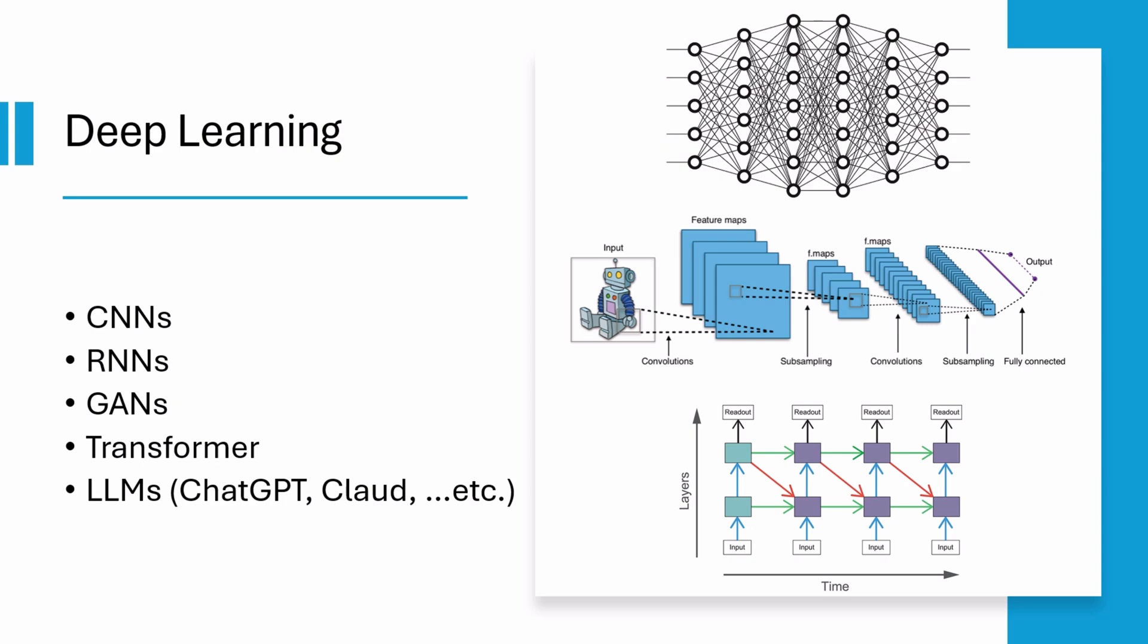These networks consist of multiple layers that collaboratively identify patterns similar to how the human brain processes information. Each layer in this network processes the information and passes it on to the next, allowing the system to understand intricate patterns and representations. This is why deep learning excels at tasks involving unstructured data like images, video, or text.